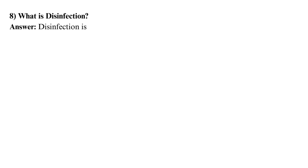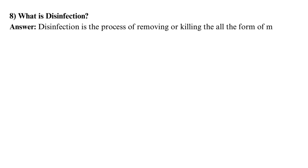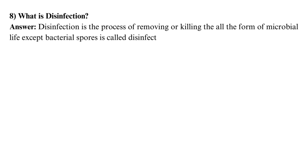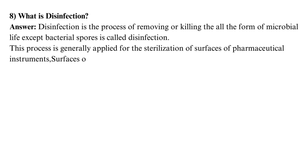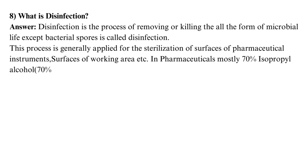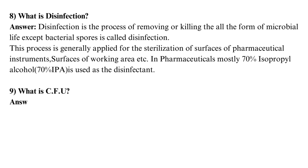What is disinfection? Disinfection is the process of removing or killing all forms of microbial life except bacterial spores. This process is generally applied for the sterilization of surfaces of pharmaceutical instruments and working areas. In pharmaceuticals, mostly 70% isopropyl alcohol (70% IPA) is used as the disinfectant.